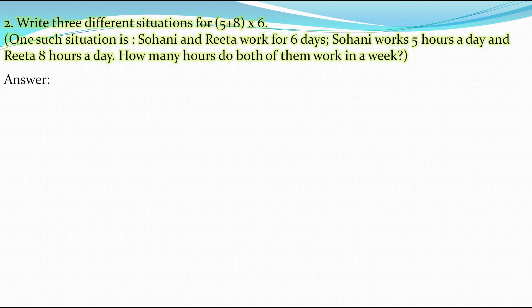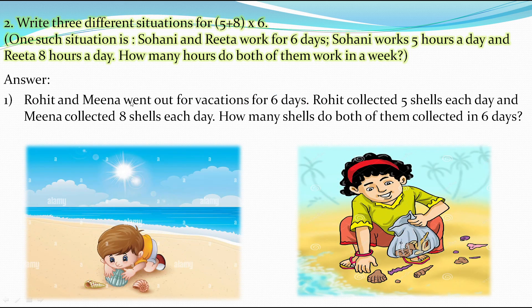The second situation: Rohit and Mina went out for vacations for 6 days. Rohit collected 5 shells each day and Mina collected 8 shells each day. So 5 plus 8 gives their daily collection, and multiplying by 6 days gives the total. This situation is also matchable with the expression (5+8)×6.